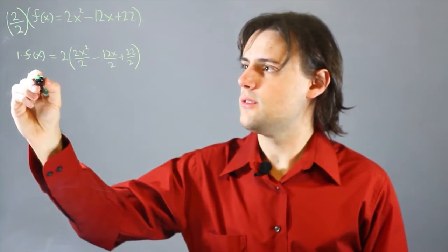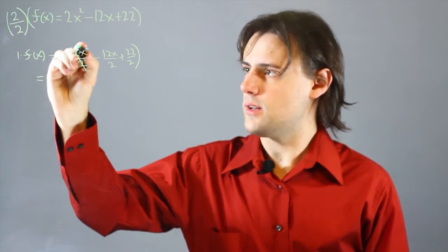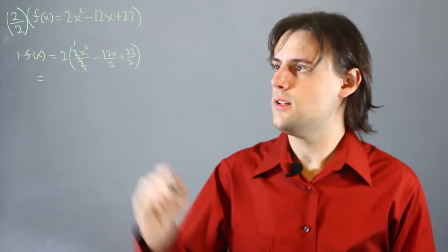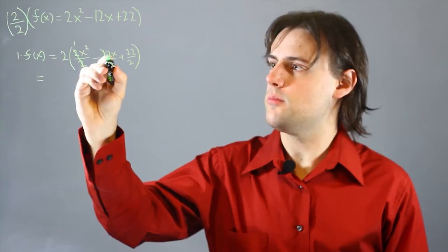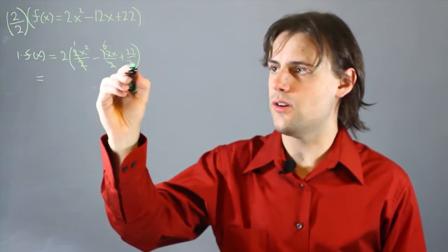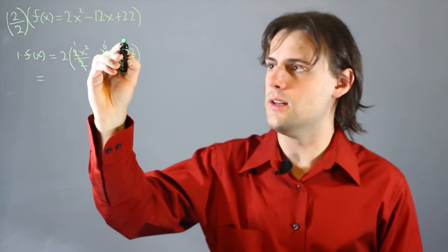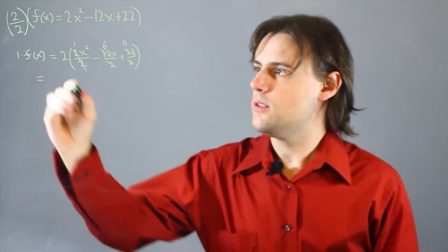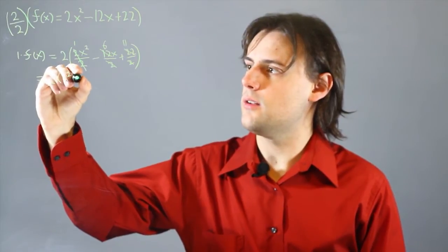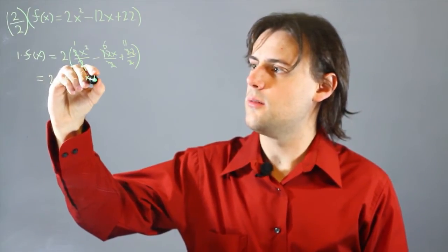This simplifies because this first term, you just get a 1 in the coefficient. For the second term, you get a 6, and finally, for this constant right here, you get 11. So we have 2 times x squared minus 6x plus 11.